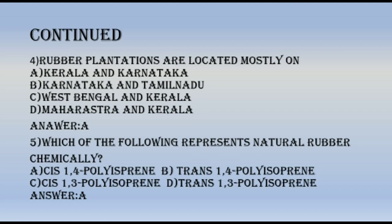MCQ 5: Which of the following represents the natural rubber chemical lean (chain)? A. Cis 1,4-polyisoprene, B. Trans 1,4-polyisoprene, C. Cis 1,3-polyisoprene, D. Trans 1,3-polyisoprene. The answer is A — Cis 1,4-polyisoprene.